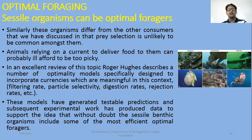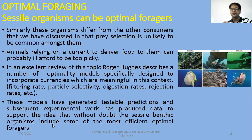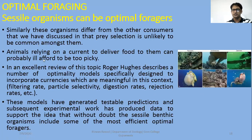Sessile organisms differ from other consumers in that prey selection is unlikely among them; they cannot do selection, and other animals can easily use them as food. These models have generated testable predictions, and subsequent experimental work has produced data to support the idea that sessile benthic bottom-dwellers include some of the most efficient optimal foragers as far as optimal foraging theory is concerned.